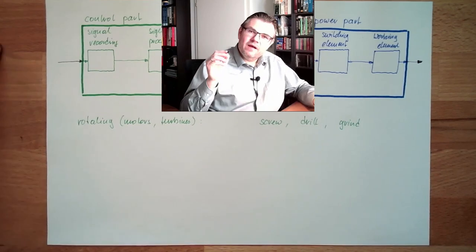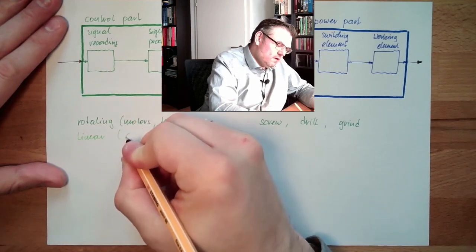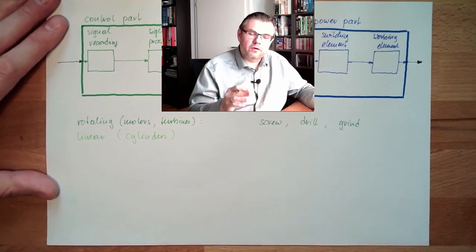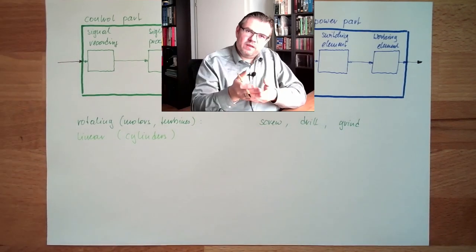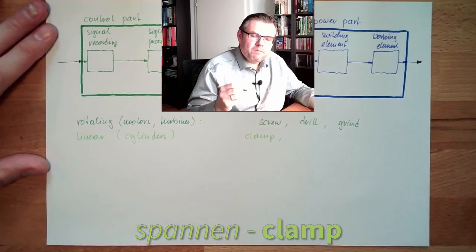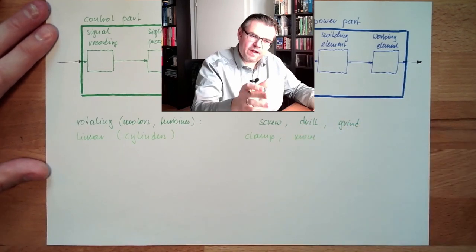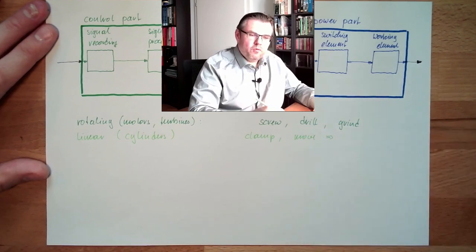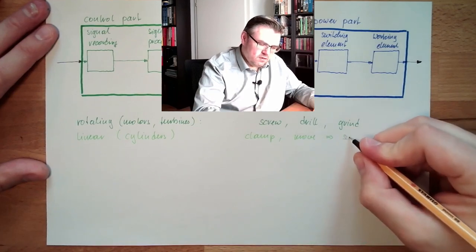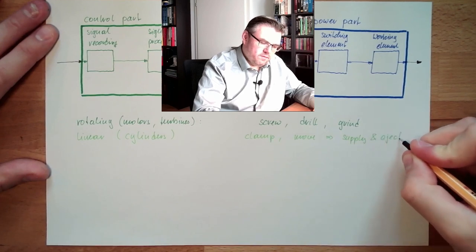Then we have linear moving parts — linear drives — called cylinders. They provide linear movement and can be used to clamp something, move something, push it somewhere else, and therefore supply items into a machine or eject items from the machine.